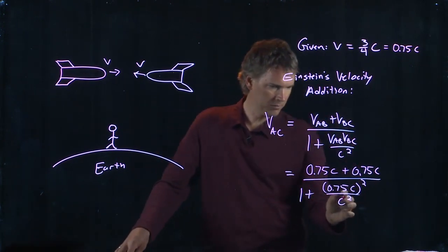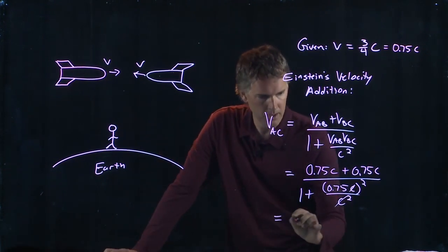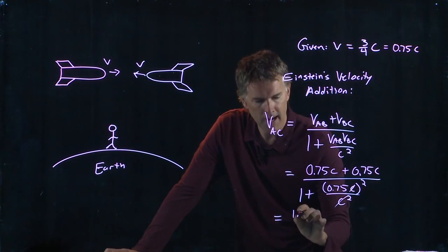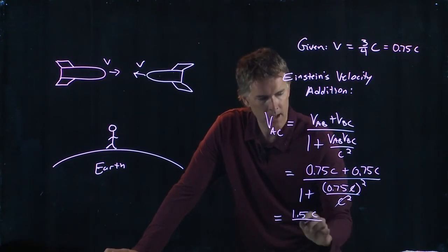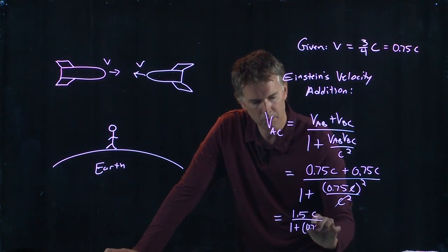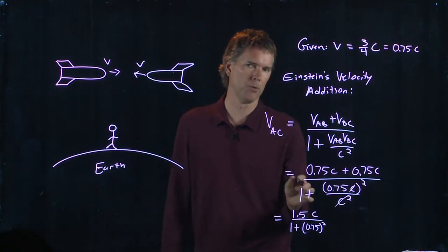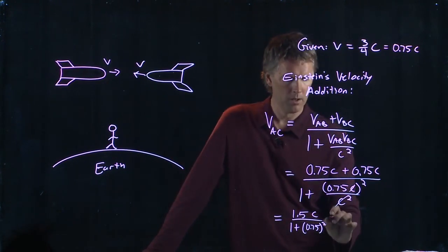Okay, and the C squared cancels with that C because we're going to square it and we're going to end up with 1.5 on the top. And then on the bottom we have 1 plus 0.75 squared. And if you do 0.75 squared, what do you get?